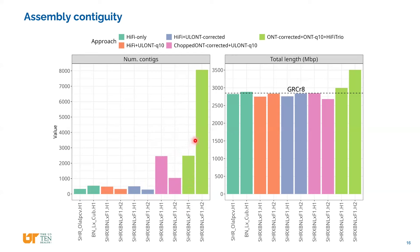Chromosome Y went heavily wrong — I think we're hitting a bug in the tool. Looking at the assembly length, it's roughly the same as the reference except for the last case, where we got about half a gigabase extra, all coming from chromosome Y, so it went very badly.